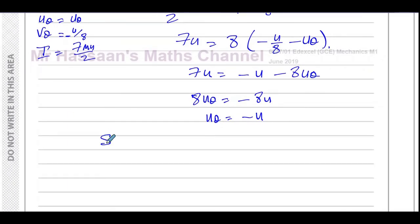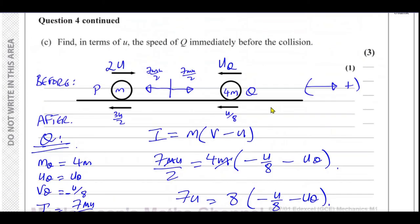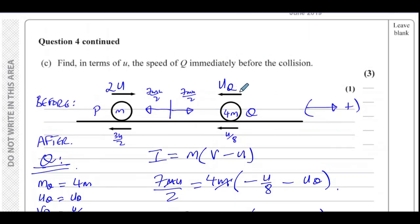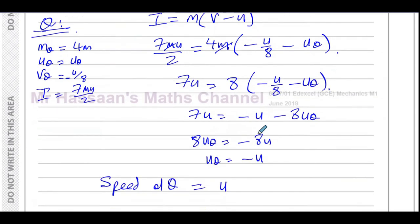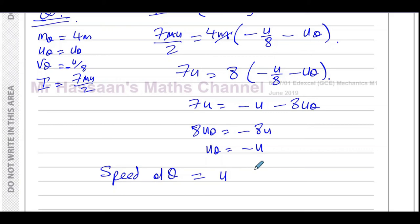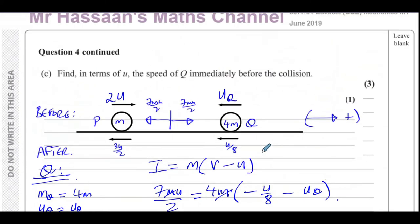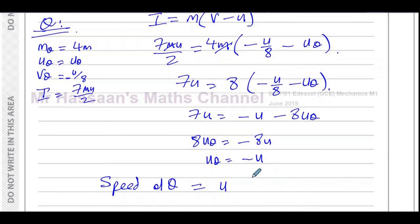The negative sign tells us Q was moving in the opposite direction to what we called positive — which is consistent with what we said earlier. But they're asking for the speed, so we don't mention the sign. The speed of Q immediately before the collision is U. Don't write minus U.